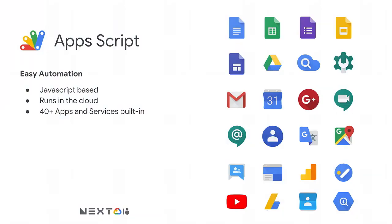So what are these APIs and what platforms do they run on? The first platform is Apps Script — a JavaScript-based development platform built into G Suite. There are 40-plus apps and services built in. It handles authentication for you and runs in the cloud.